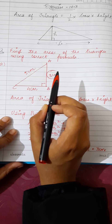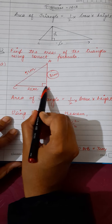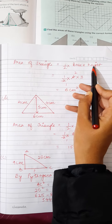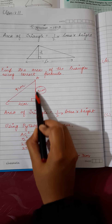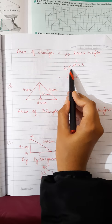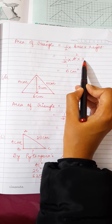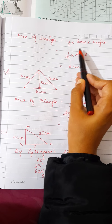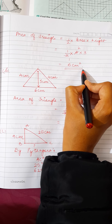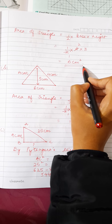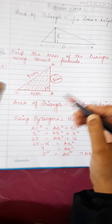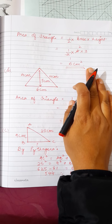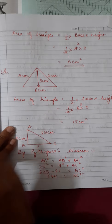Now to find the area of the triangle I have the base and the height. Area = half into base into height. The base is 4 and the height is 3, so: half × 4 × 3 = 6. The area of this triangle is 6 centimeters square.